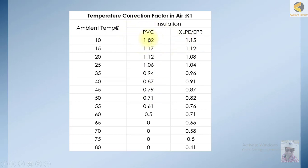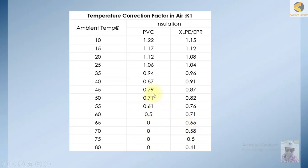An interesting thing here is that the PVC rating factor or K factor is more than XLPE because PVC can bear more temperatures. As the ambient temperature where the cable is laid increases, the K factor or rating factor that you multiply with the cable rating is also decreasing. After 65 degrees, it is not available to use PVC, whereas XLPE can be used up to extreme temperatures of 80 degrees. So PVC is preferable at lower temperatures. This is the example of the temperature correction factor K1.